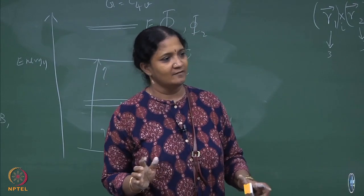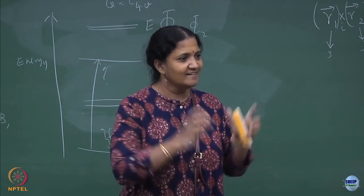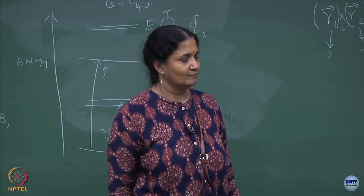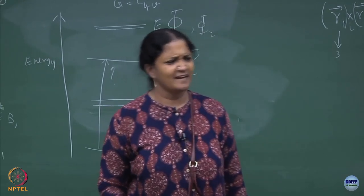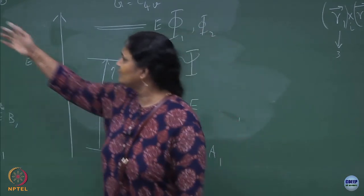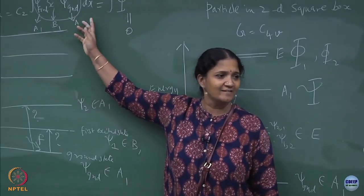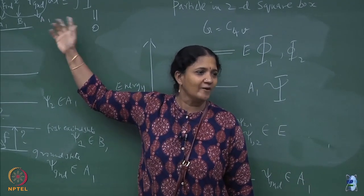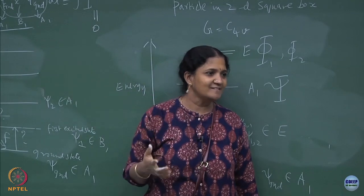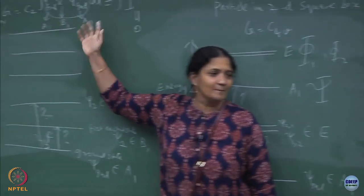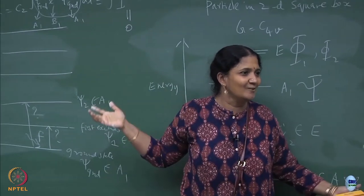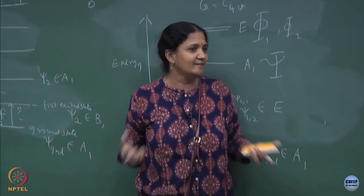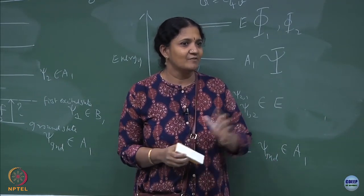You do not need to compute the matrix element between an initial state and a final state due to this operator. You can do elaborate quantum mechanics — write the explicit wave function, do the integral and show it to be 0. This simple thing you know: odd-even and all you have learned. But in a complex situation you may not have this information. Without even computing, to say it is 0 or cannot be 0 is itself a powerful tool — that is what I want you to appreciate from group theory.